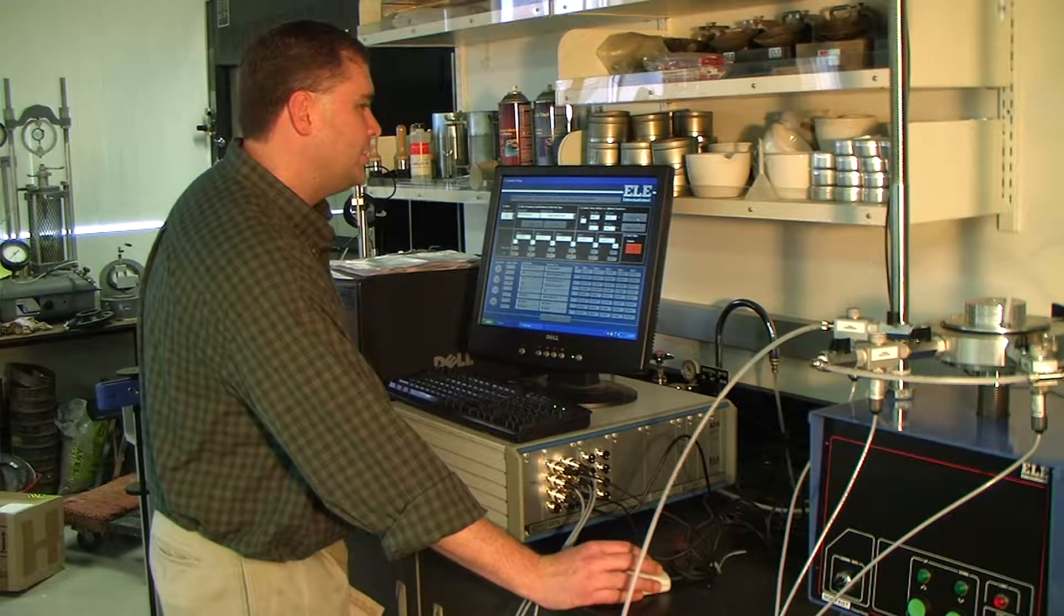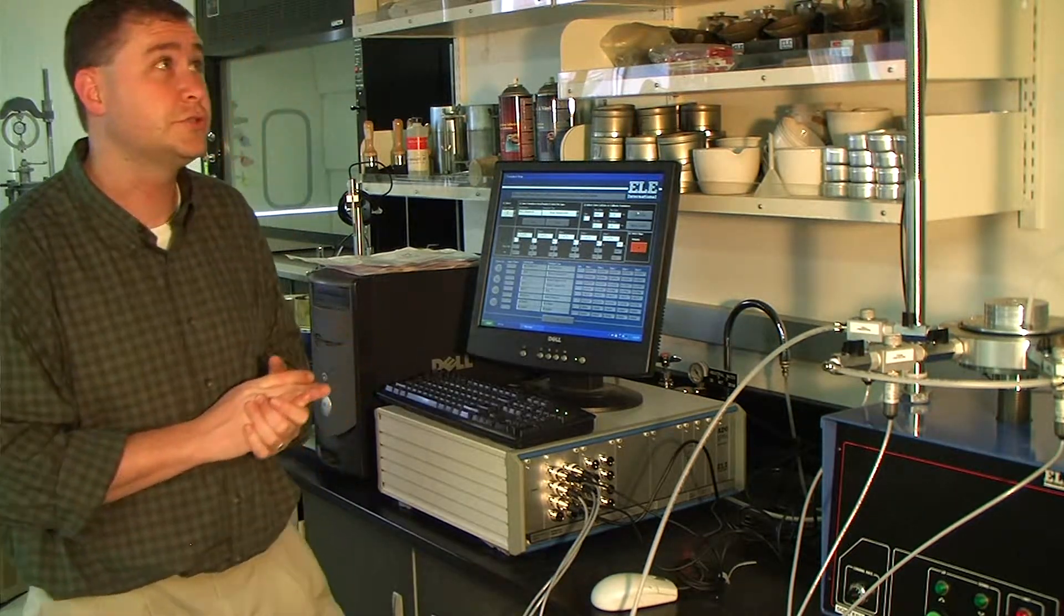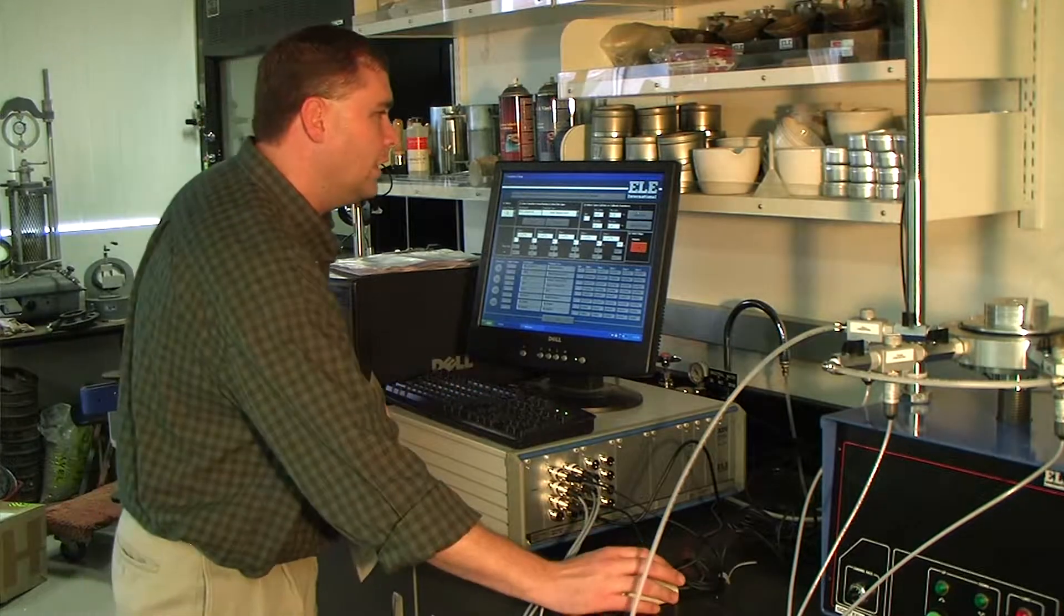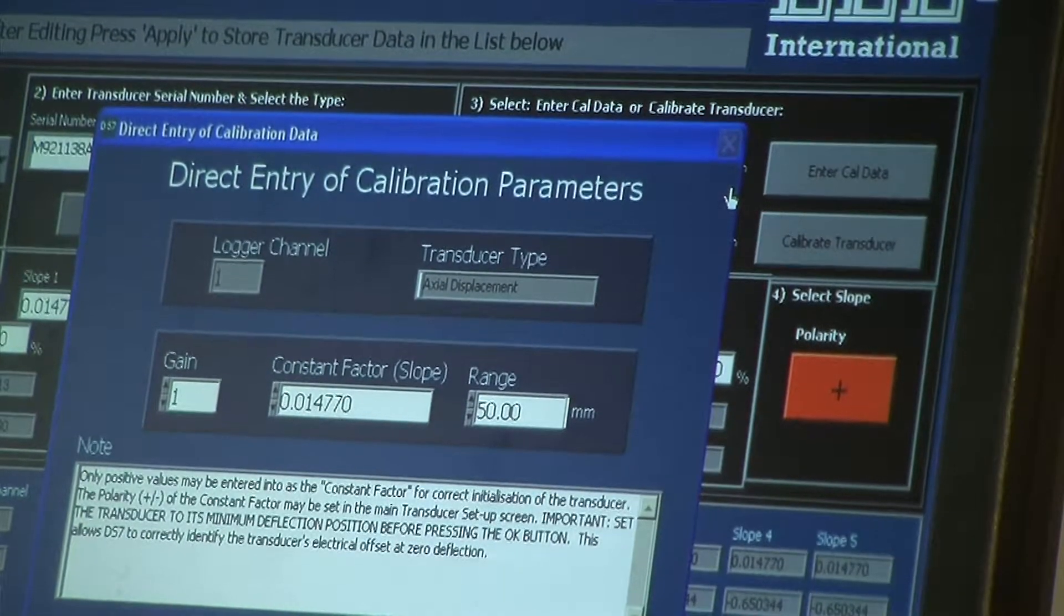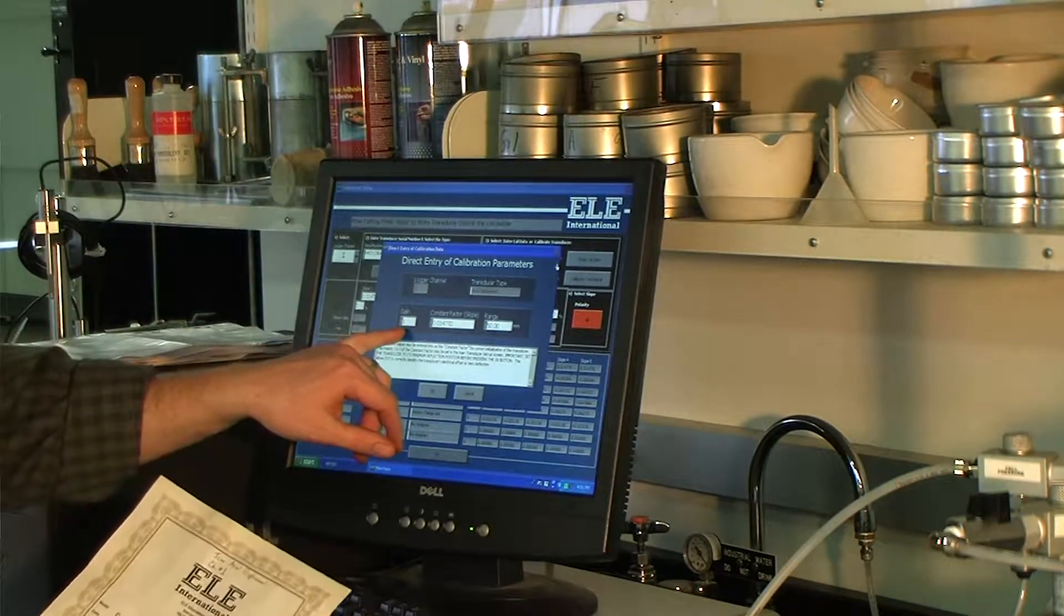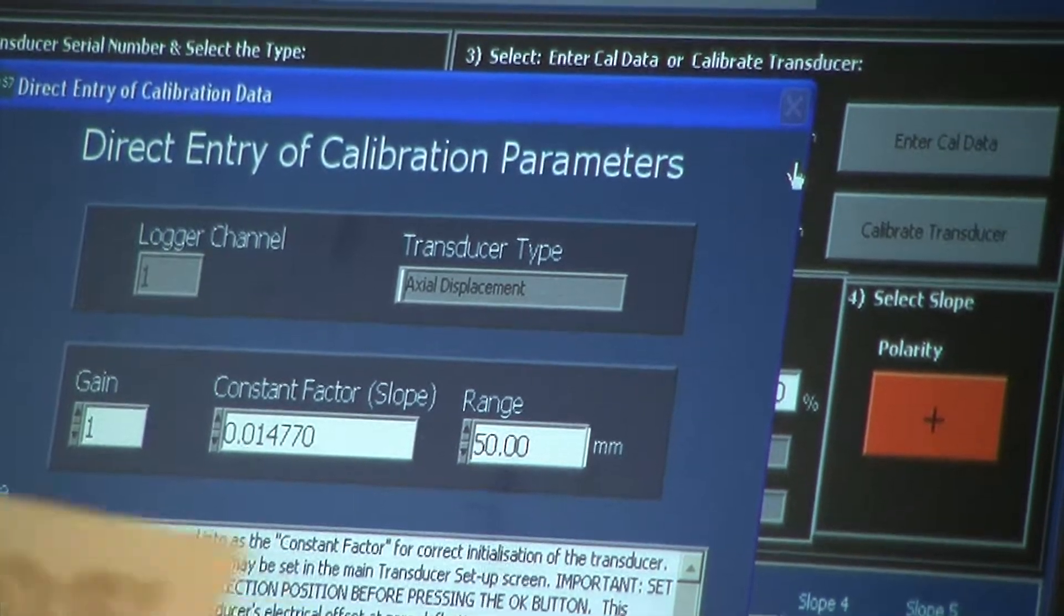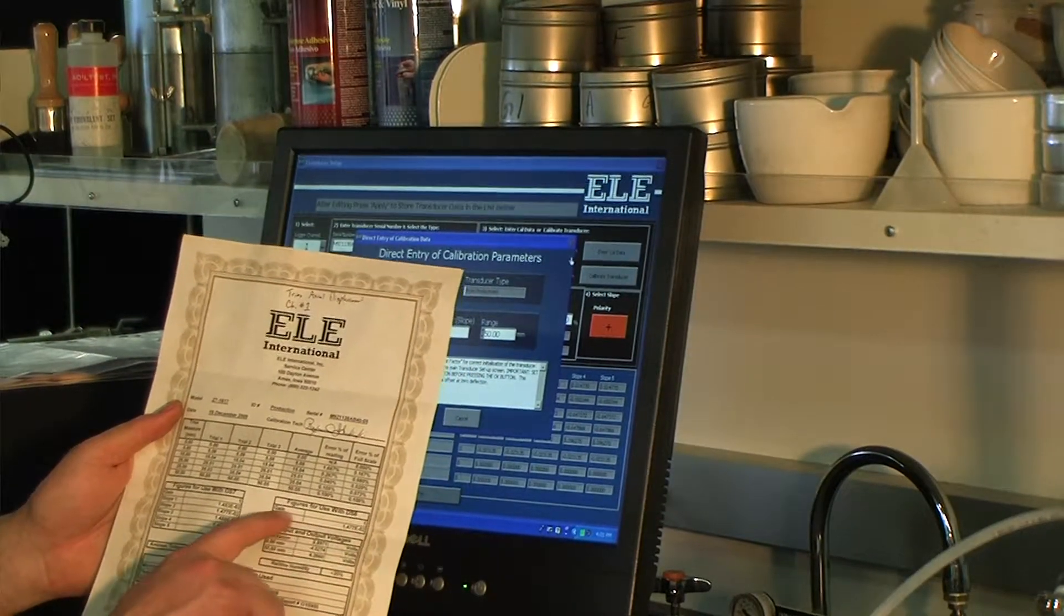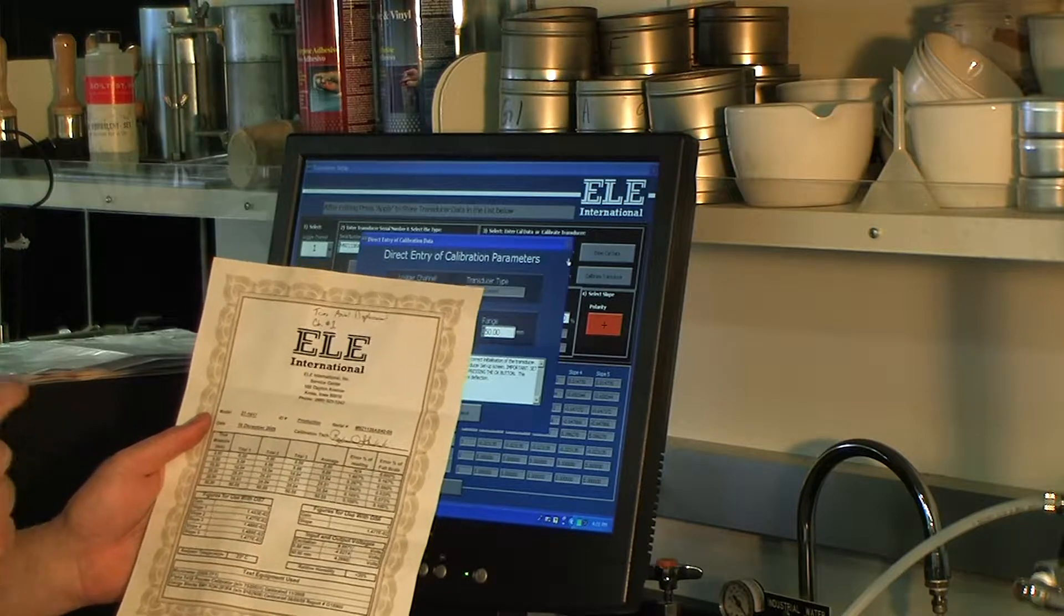This one we have already talked about is the axial displacement. And then we go to step three, which is where we actually enter or calibrate the transducer itself. We have that option. Because these transducers are new out of the box, they have been calibrated at the factory and are provided with calibration sheets, which I have already shown you. So we will hit the button called enter cal data. It will bring up a new screen where we need three pieces of information, all provided on this calibration sheet.